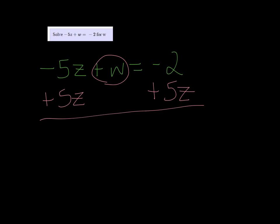And I get w is equal to negative 2 plus 5z. And that's it — w is by itself now.